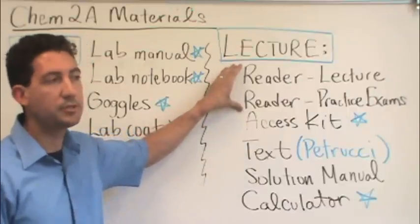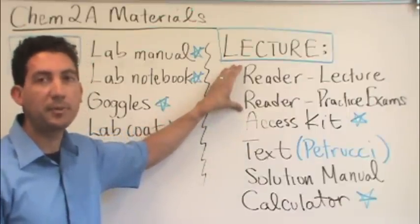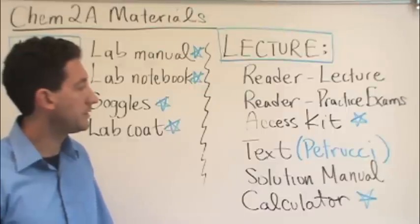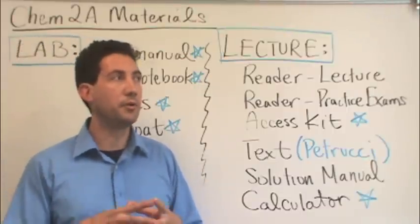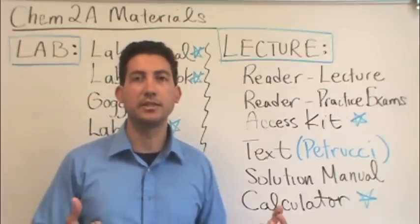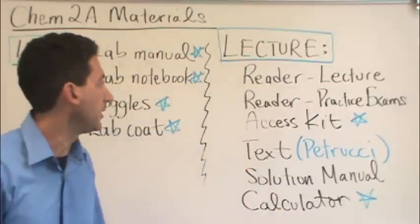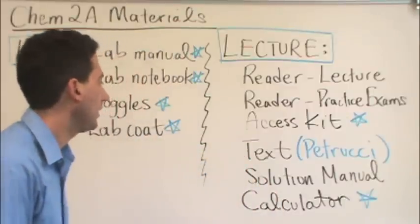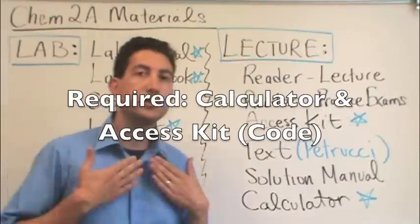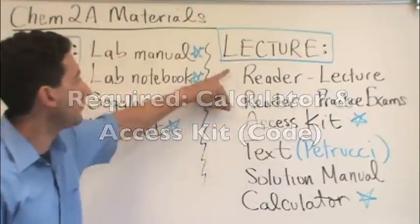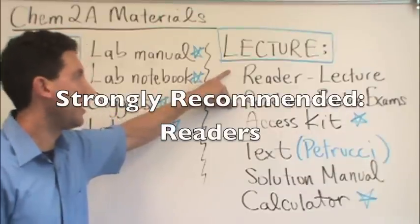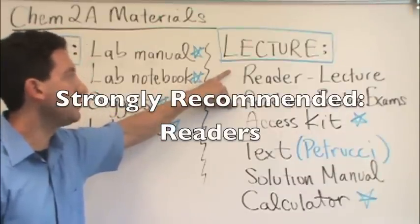Just make sure it has to be for the 10th edition of the textbook or it will not work. So that's the access kit. Everything except the readers are available in the student bookstores. You can get the access kit, you can get the text, you can get the solution manual if you want. All of those things where an access kit is required in order to do the required homework. That's all in the bookstore. This is purchasable at Davis Coffee Max,